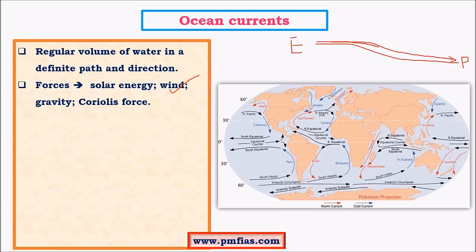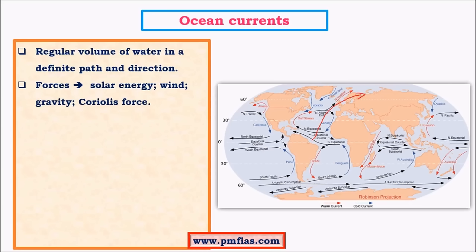Coriolis force influences the direction of ocean currents. In the northern hemisphere, the movement of ocean currents is clockwise, whereas in the southern hemisphere they are anti-clockwise. Coriolis force is a deflection force: a body moving in the northern hemisphere deflects to its right, whereas a body moving in the southern hemisphere deflects to its left. This Coriolis effect is generated due to earth's rotation.